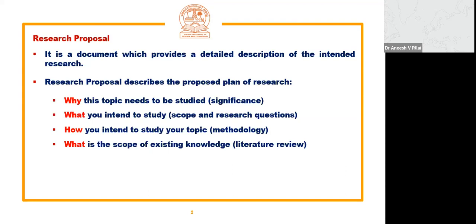The point is literature review. You have to identify the existing literature, and you have to say what is the scope. It is not just giving a summary of available literature. You are supposed to say there is a literature, but that literature is not sufficient or not addressing your research question. Even if it is addressing, the answers are not sufficient or are ambiguous. That is why your research is relevant. By analyzing existing literature, you have to identify the gap. It is not just a summary — you have to pinpoint the gaps existing in available literature.